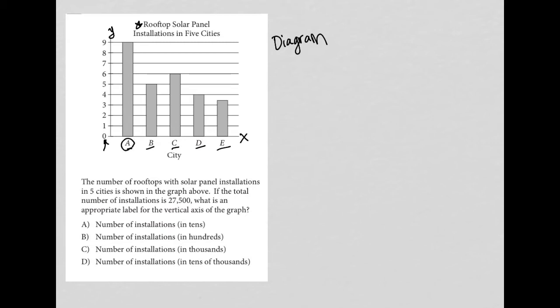So in city A, for instance, city A has 9, city B has 5, city C has 6, city D has 4, and city E has 3.5.